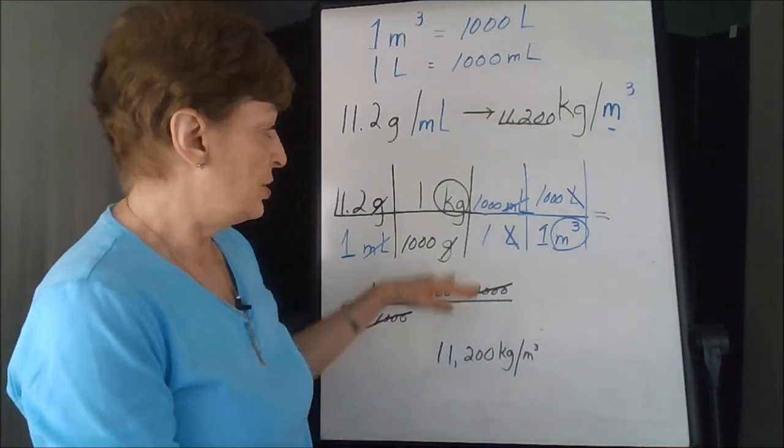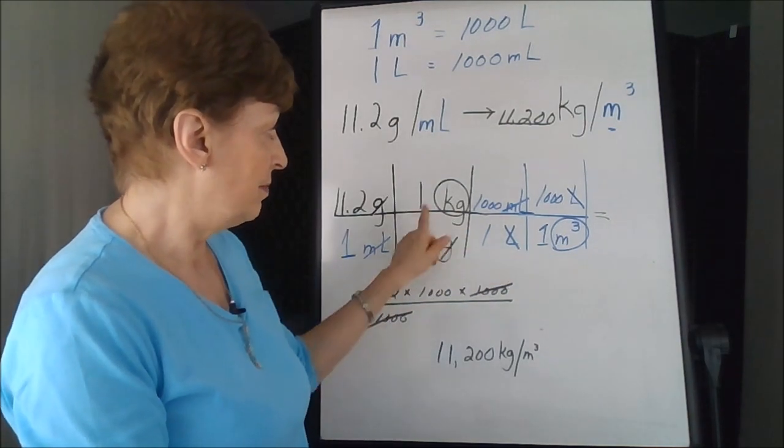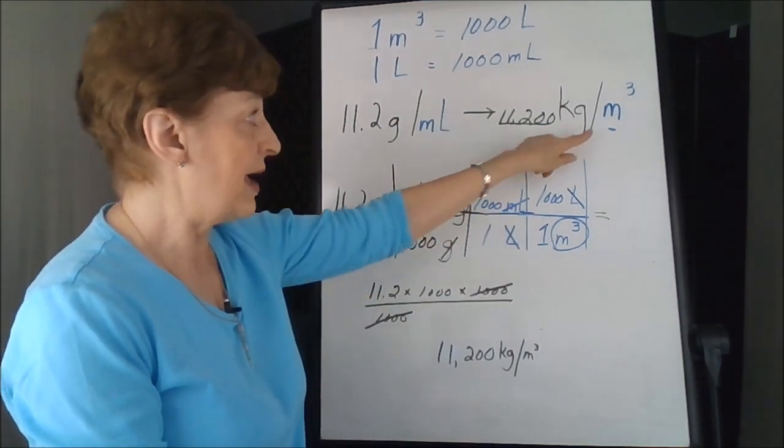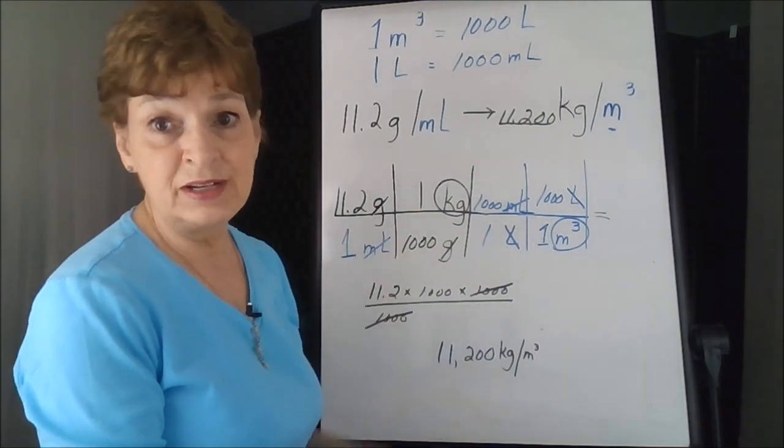The biggest part about it is to be neat and to track your labels. Make sure that you know where you're headed for these. And then the rest is just simply multiplication and division.